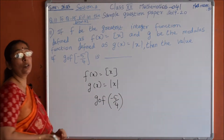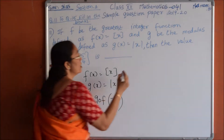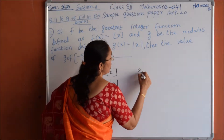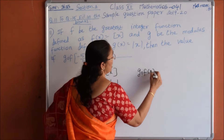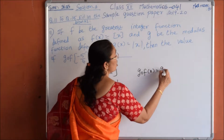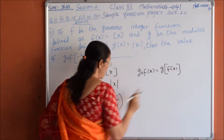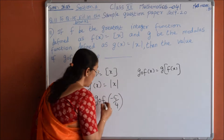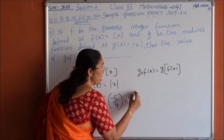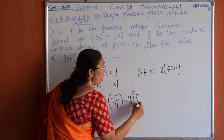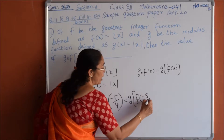To find the composite function, g∘f(x) = g(f(x)). So g composition f of minus 5 by 4 is g of f of minus 5 by 4.